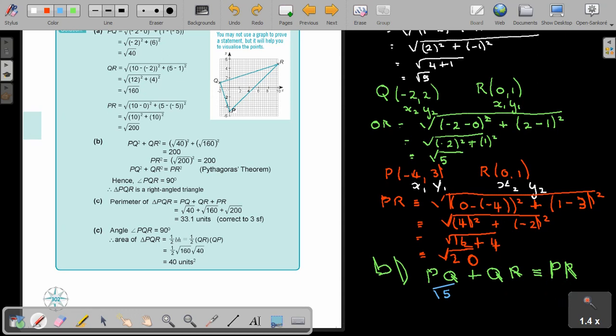That will be square root 5 plus square root 5 equals square root 20. Let's just see if it's coming out. This is square root 5 plus square root 5 equals square root 20 and let's just take a calculator and check.